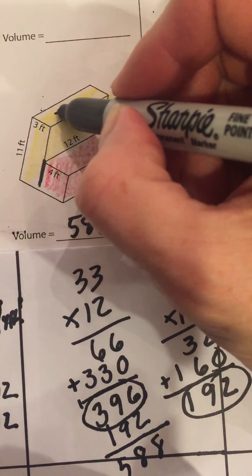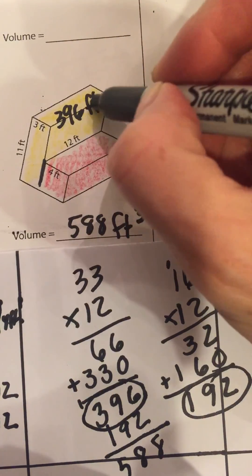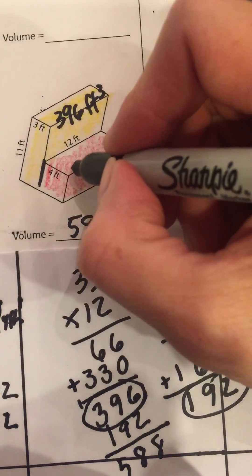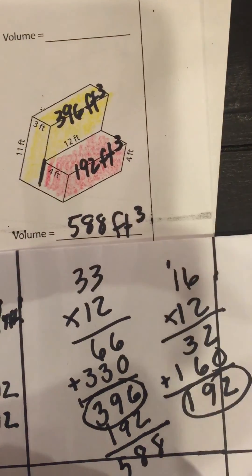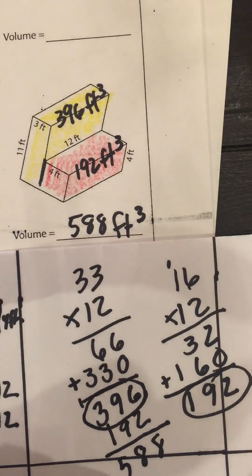This first shape was 396 cubic feet and this one was 192 cubic feet. Okay, I hope this is helpful and it makes your homework a little bit easier.